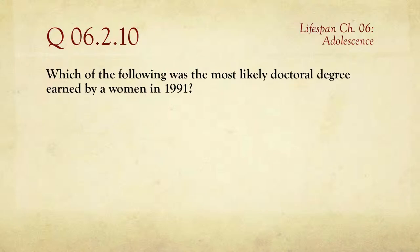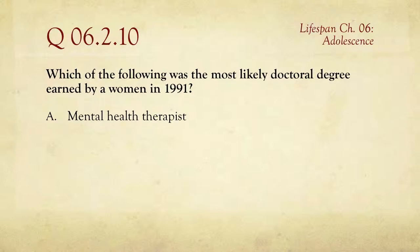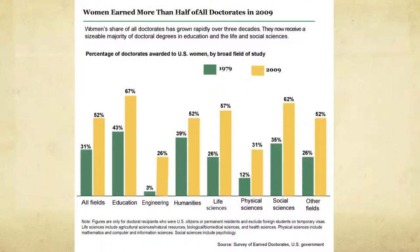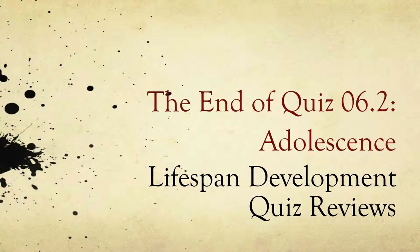Last question: which of the following was the most likely doctoral degree earned by a woman in 1991? The choices are mental health therapist, nuclear scientist, biologist, or architect. There aren't many doctoral degrees in architecture, so we can cross that off. The answer is actually mental health therapist — we're in a psychology class, so it shouldn't be too surprising. Data shows women earned more than half of all doctorates in 2009, and it's been trending in that direction. That is the end of the second online quiz for Chapter 6 on adolescence in Lifespan Development. Thanks for watching.